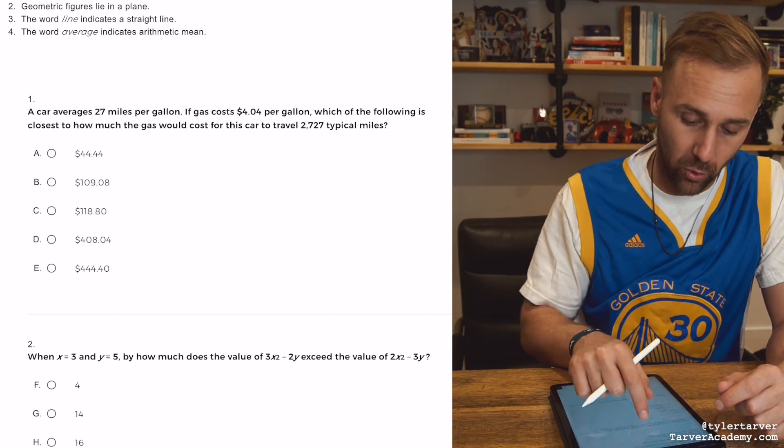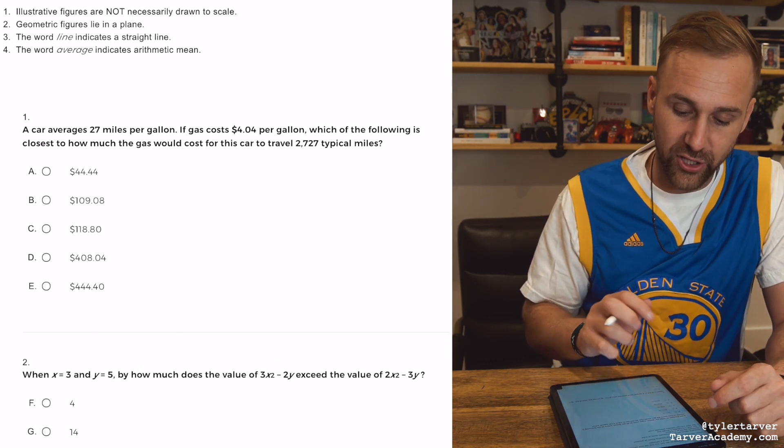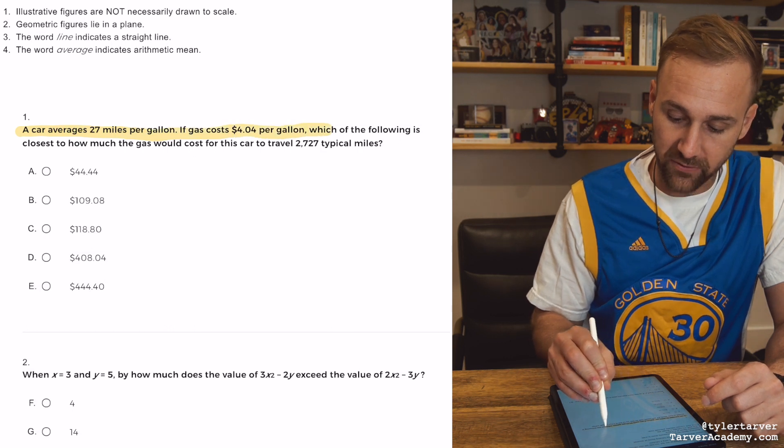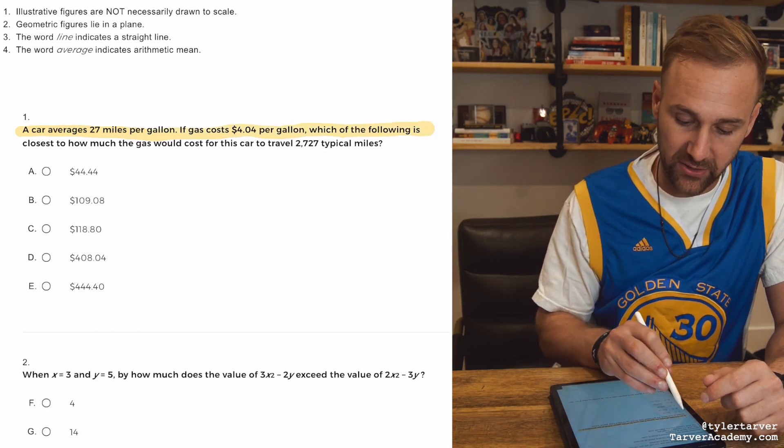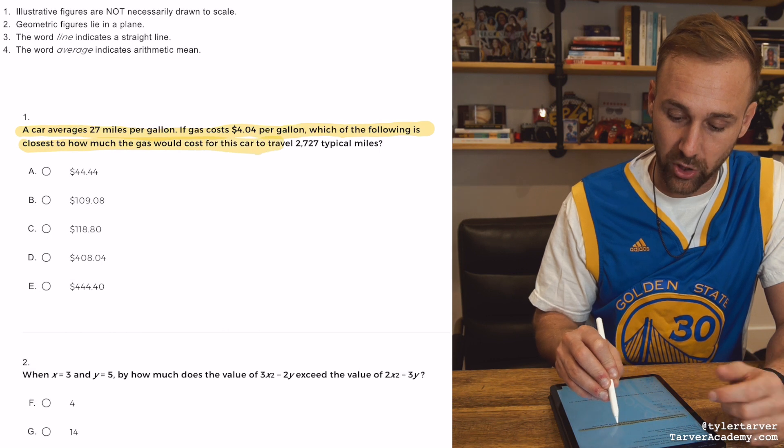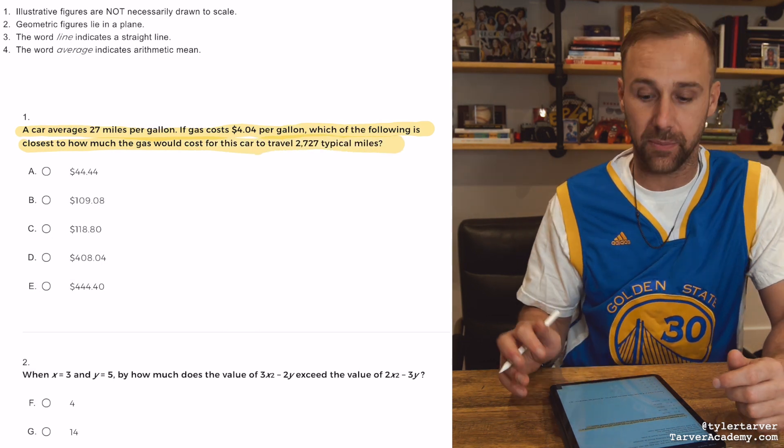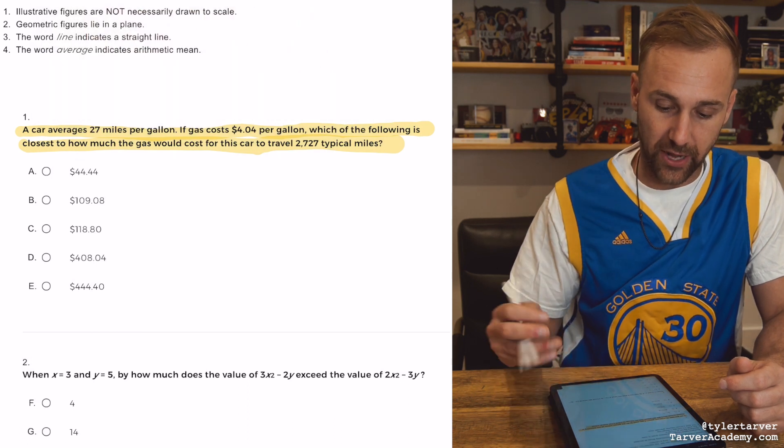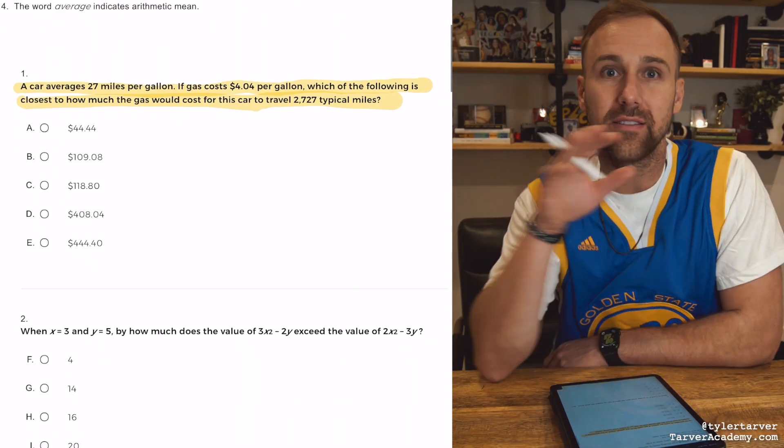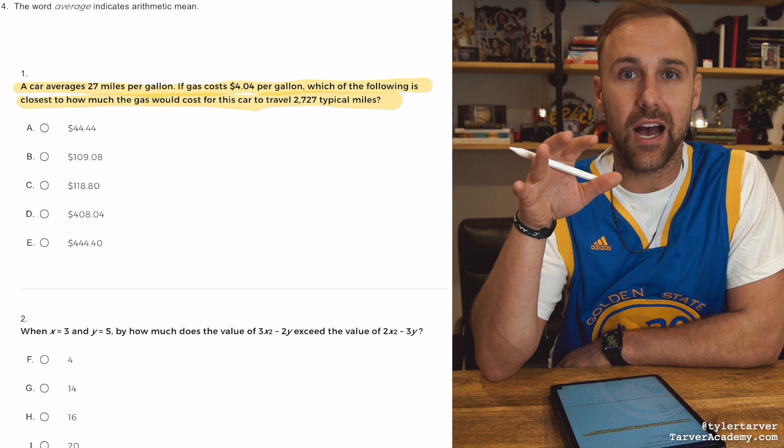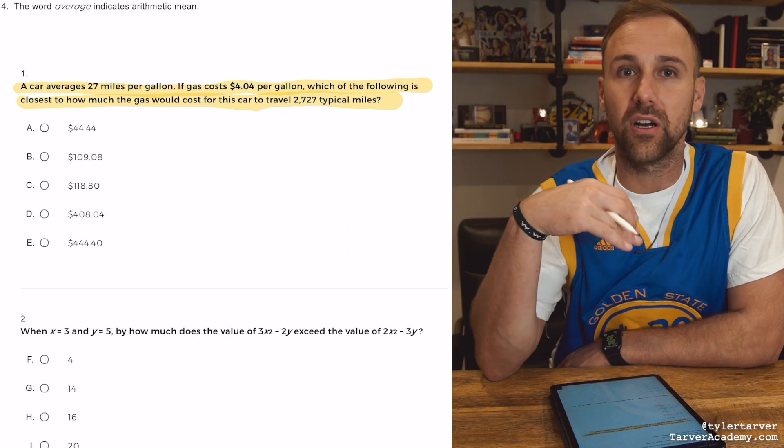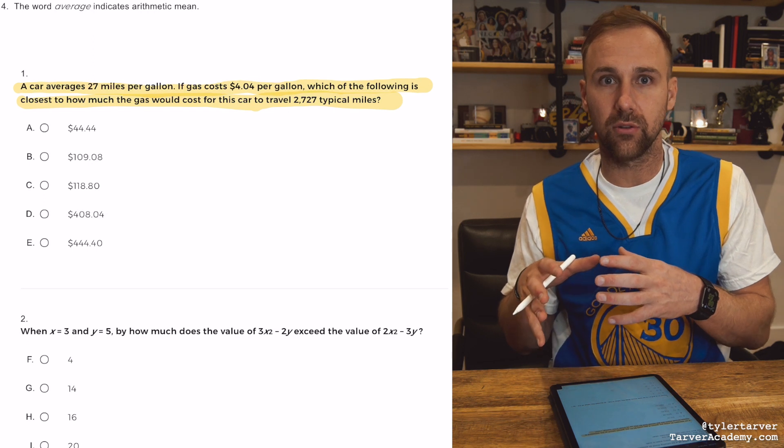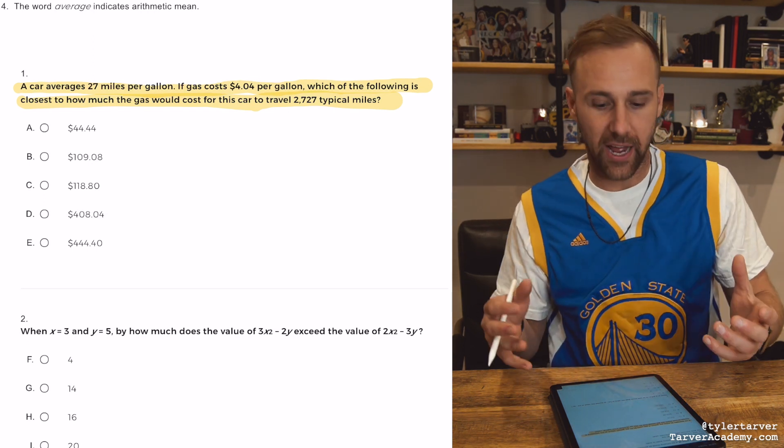Okay, this question, we're going to look at number one. It says, a car averages 27 miles per gallon. If gas costs $4.04 per gallon, which of the following is closest to how much gas would cost for this car to travel that many typical miles? These are some good questions, ladies and gentlemen. Okay, so let's work this together. You get these questions all the time whenever you're getting into algebra, algebra 2, geometry. They love for you to practically be able to lay out miles per gallon stuff.